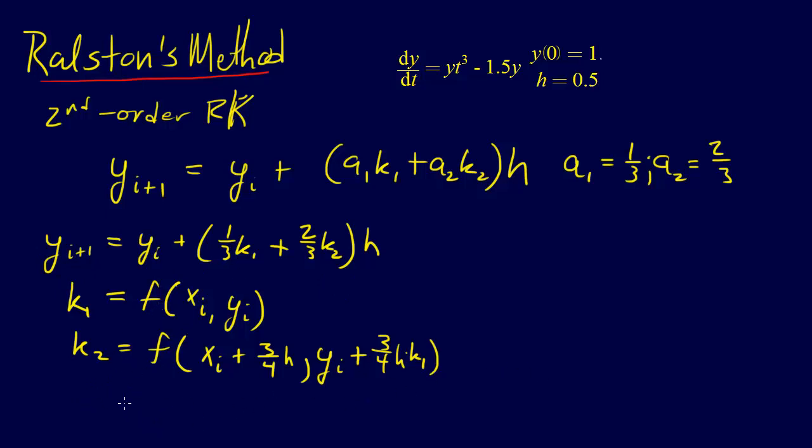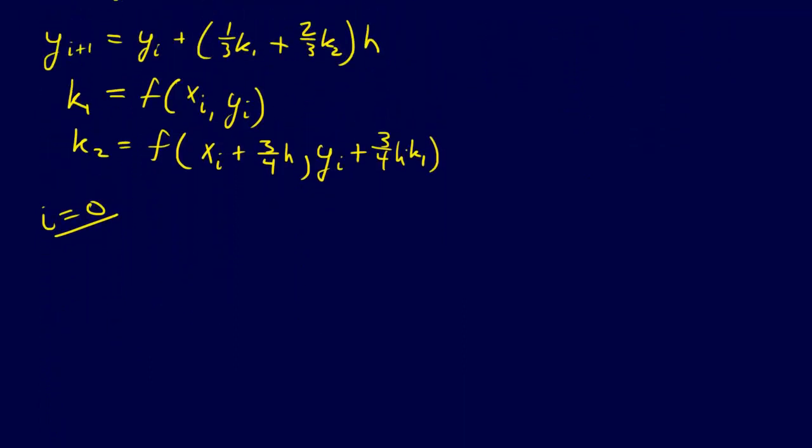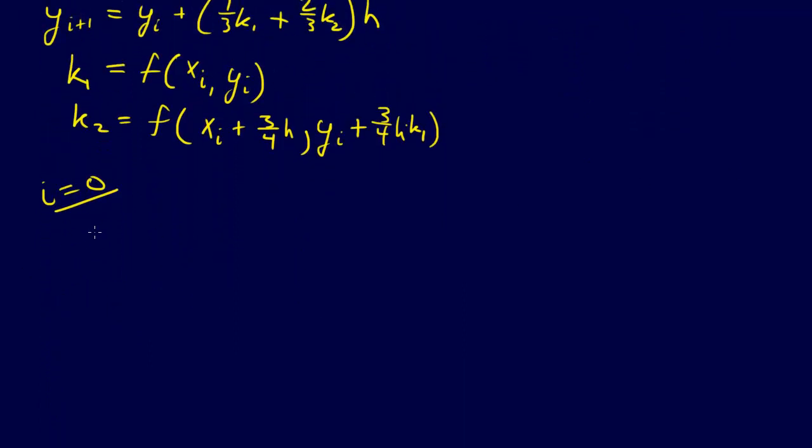So let's go ahead and at least step through one. So setting i equal to 0, we'll at least make one step here. So setting i equal to 0, that means that our Y_1 equals Y_0 plus (1/3 K_1 plus 2/3 K_2), all that times H.